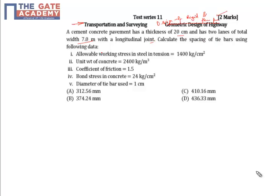Allowable working stress in steel in tension is 1400 kg per centimeter square. Unit weight of concrete is 2400 kg per meter cube. Coefficient of friction is 1.5. Bond stress in concrete is 24 kg per centimeter square. Diameter of the tie bar used is 1 centimeter. We know that area of steel required is equal to F×P×H×W divided by 100×Ss.